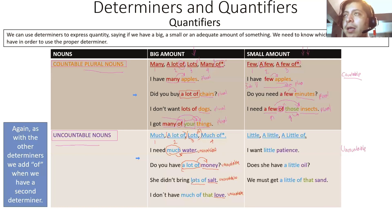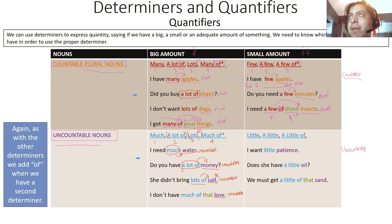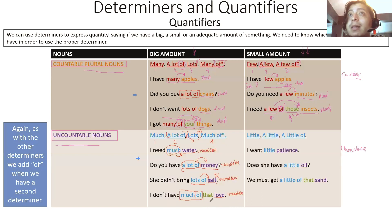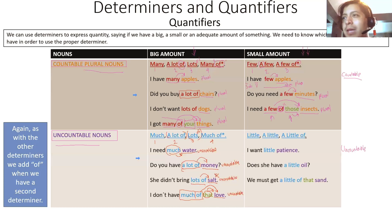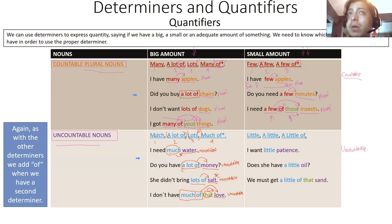She didn't bring lots of salt — 'salt' is uncountable. You never say 'salts.' You can say 'lots of salt,' 'a lot of salt,' or 'much salt,' but never 'many salt' or 'many of salt.' For 'much of' with love: why 'much of' instead of 'much'? Same rule as always — because we have a second determiner. 'That' is the second determiner. I don't have much of that love. When we have a second determiner, we don't use 'much' — we use 'much of.'